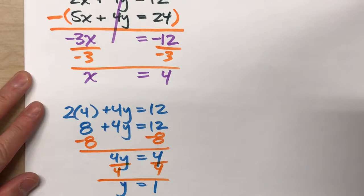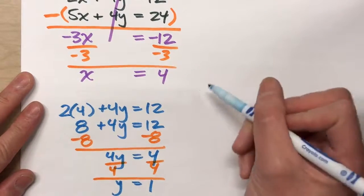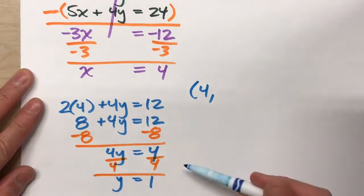So now, I know what my solution is. x is 4, y is 1.